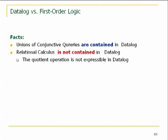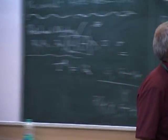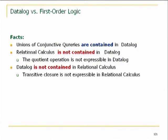Let's compare datalog with calculus. Unions of conjunctive queries are contained in datalog. But calculus is not contained in datalog — datalog cannot do all of calculus. The reason is simply because we have only allowed monotone operators: we cannot express difference, we cannot express the quotient operation. On the other hand, datalog is not contained in calculus because we have the transitive closure.